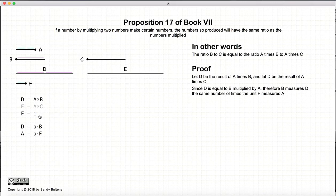So according to the definition of multiplication, if D is equal to A times B, that means that B measures D the same number of times that F measures A. And let's just look at it visually. B measures D two times in this example, and the unit F measures A two times. So again, the definition of multiplication means that A times B is equal to D.